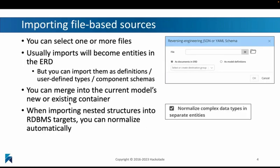So let's take a look at file-based reverse engineering processes. You can select one or more files that you can choose from, and then these files will be read by Hackolade and it will import what it finds in those files as entities in your entity relationship diagram. You can also choose to import it as model definitions, so you can use them yourself at a later point. But the most common use case would be that you import it into your ERD.